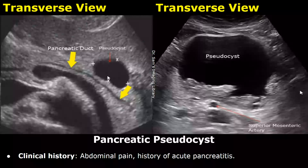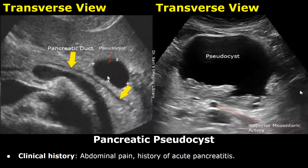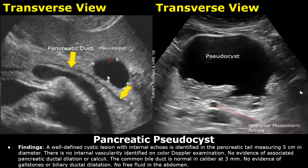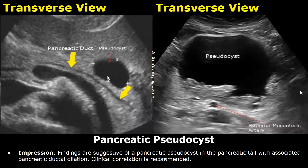This report example is of pancreatic pseudocyst. The clinical history was abdominal pain and history of acute pancreatitis. Findings: a well-defined cystic lesion with internal echoes is identified in the pancreatic tail or body, and then you can write its size. There will be no internal vascularity in a pseudocyst. After these lines, you can write about the pancreatic duct. In the impression: findings are suggestive of a pancreatic pseudocyst, then write its location, pancreatic ductal dilation, and clinical correlation is recommended.